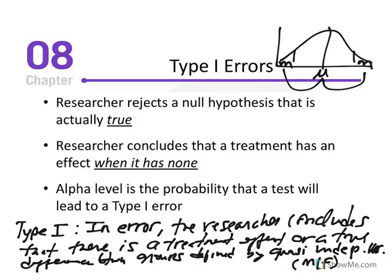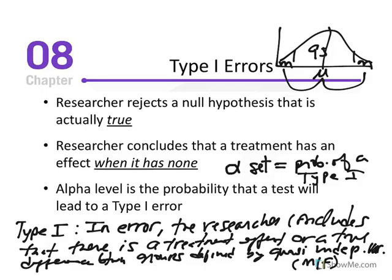The alpha level is the probability of a type 1 error. Alpha equals the probability of a type 1 error. For example, if 95% is in the center where we would fail to reject the null, there is 5% left over across those two tails. Those values do occur, and there's a 5% chance that we would obtain an extreme value simply by chance. Therefore, the alpha level set is equal to the chance of committing a type 1 error — they are equivalent to one another.